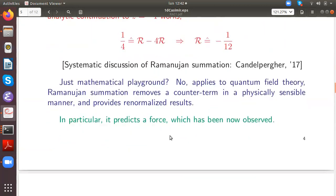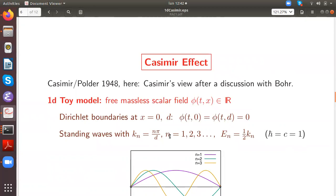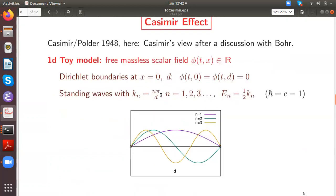In particular, it predicts a force which has now been observed experimentally. Here I come to the Casimir effect, first predicted by the Dutch physicists Casimir and Polder in '48. But here we follow the view that Casimir took a little bit later after a discussion with Niels Bohr.